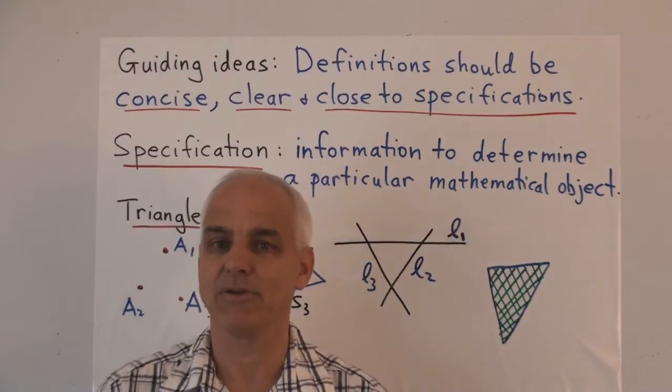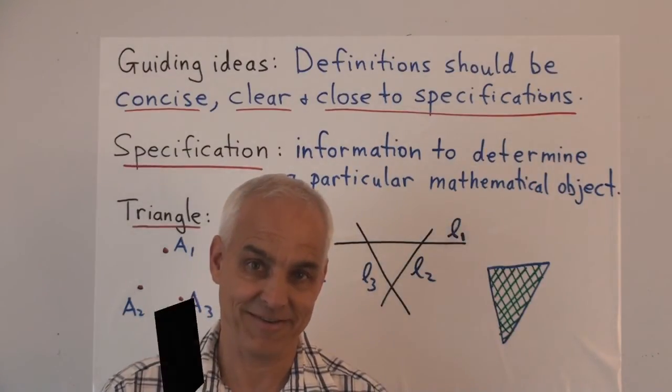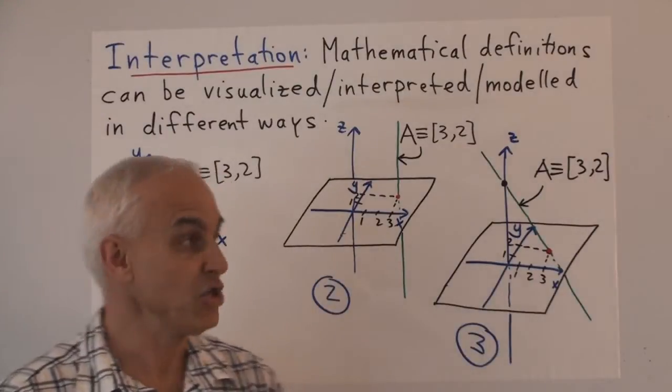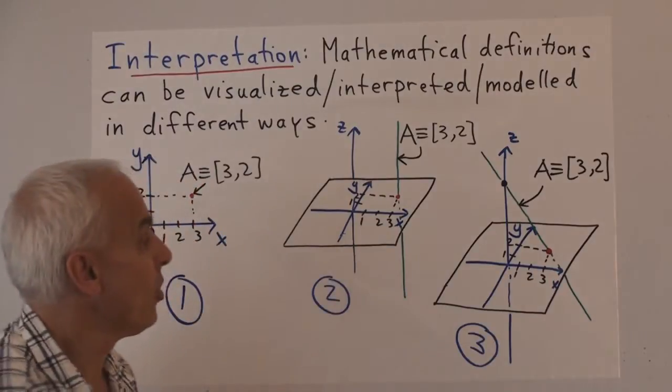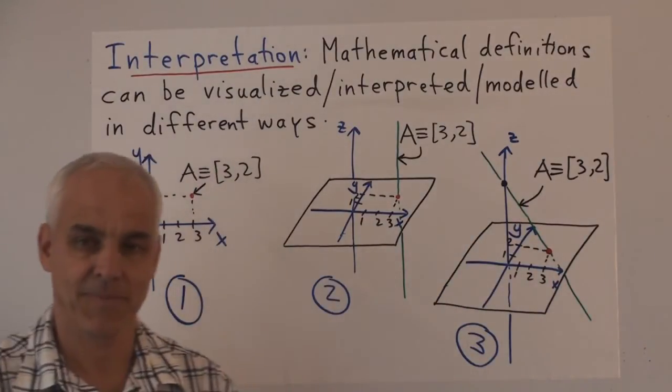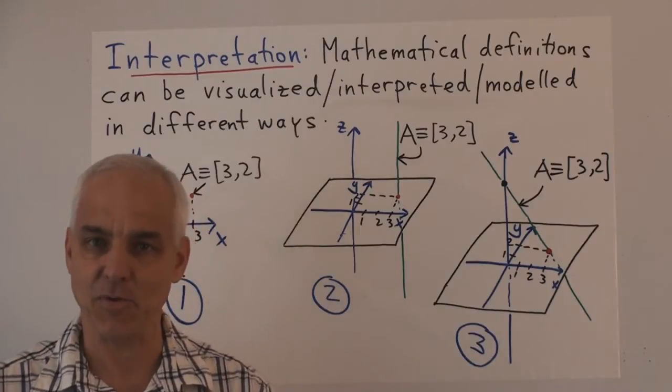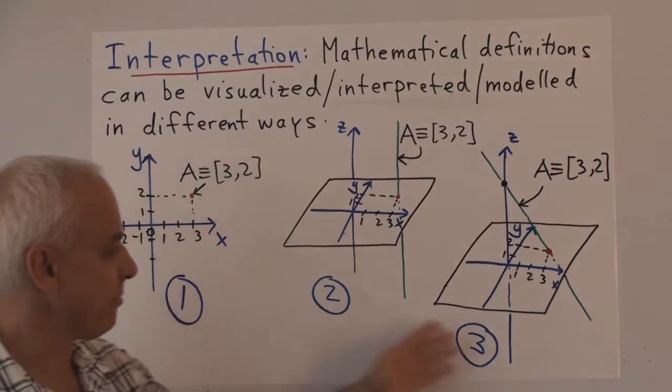Now let's talk a little bit about the interpretation of mathematical definitions. So mathematical definitions can be visualized or interpreted or modeled in different ways. This is an interesting idea with a lot of ramifications. So let me try to explain it through a very simple example.